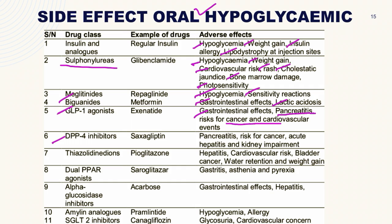DPP-4 inhibitors: pancreatitis, risk for cancer, acute hepatitis, and kidney impairment. Thiazolidinediones: hepatitis, cardiovascular risk, bladder cancer, water retention, and weight gain. Alpha-glucosidase inhibitors: gastrointestinal effects and hepatitis. Amylin analogues and SGLT inhibitors: hypoglycemia, allergy, glycosuria, and cardiovascular concerns. You can remember the most common side effects associated with each oral hypoglycemic drug class.